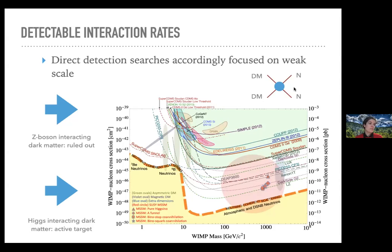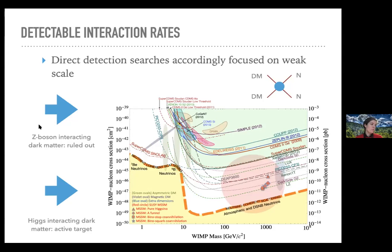If you have an annihilation process to standard model particles going through some heavy state, you can use crossing symmetry to calculate an expected interaction rate for a scattering process. That's what motivated direct detection experiments. Dark matter interacting via the Z boson gives a cross section of about 10⁻³⁹ cm², which is now ruled out by many orders of magnitude. LZ and XENONnT reach seven to eight orders of magnitude below this Z boson rate.